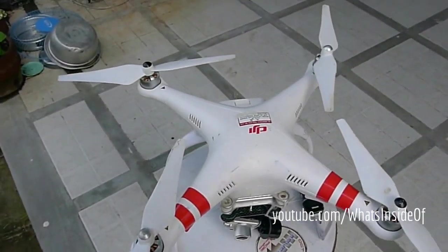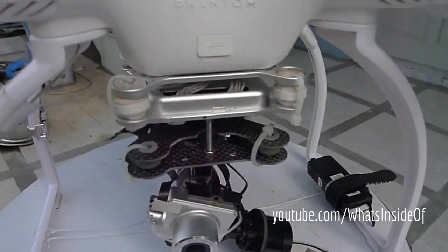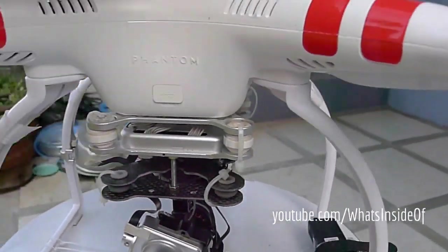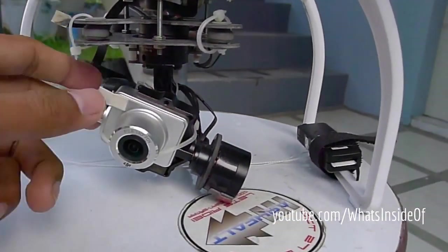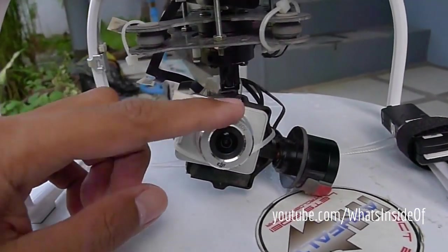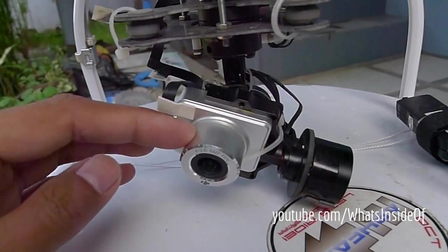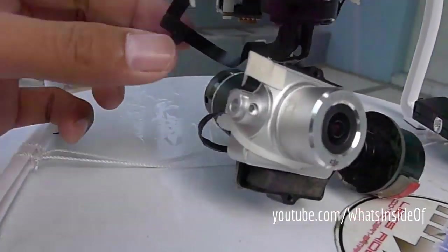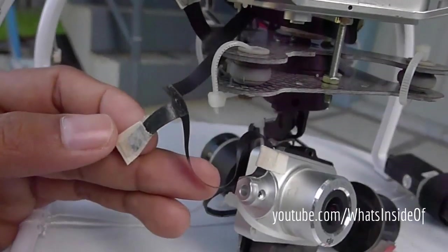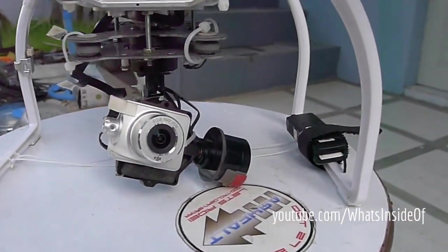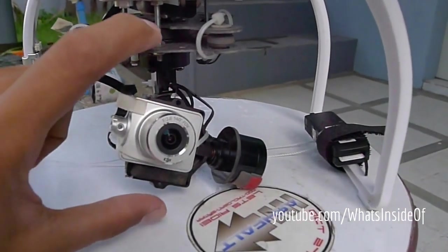People have been asking me how I installed the DYS 3-axis gimbal on my Phantom 2 Vision Plus. Just to run down, I'm still using the original Phantom 2 Vision Plus camera and also using the original flat ribbon cable. You can see there, so basically what we're going to do is remove the original gimbal.